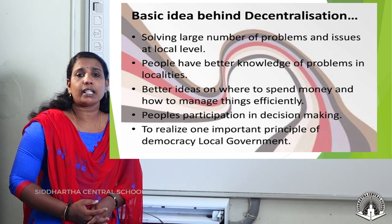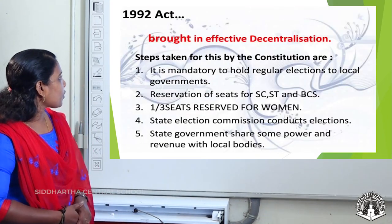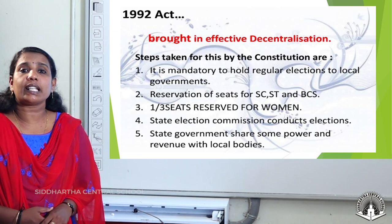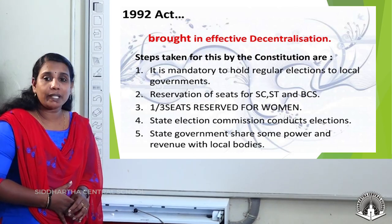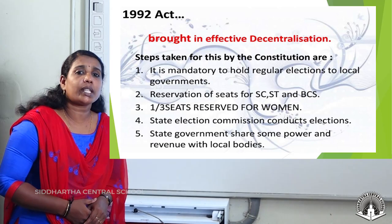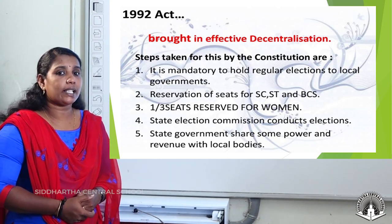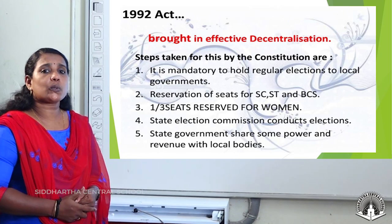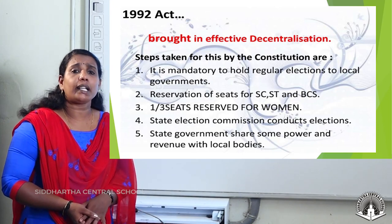A lot of provisions were made to make the administrative system in the local government more effective. The first provision: it is mandated to hold regular elections to the local government bodies. Second, reservations were made for SC, ST, and OBCs — seats were reserved for Scheduled Castes, Scheduled Tribes, and other backward communities. Then, one-third positions were reserved for women candidates, to increase the participation of women. And for smooth conducting of elections, an independent election commission was appointed.